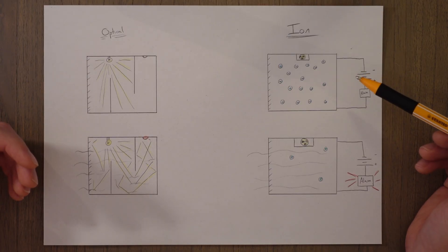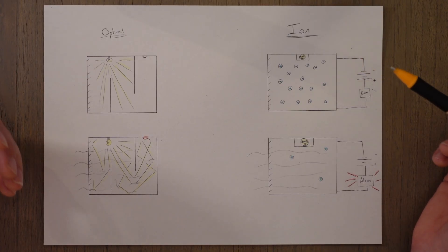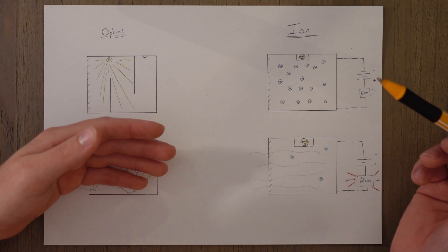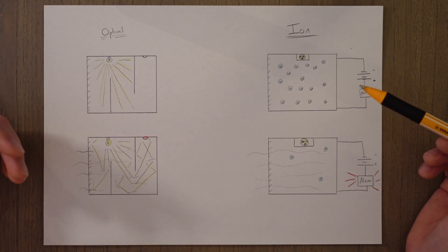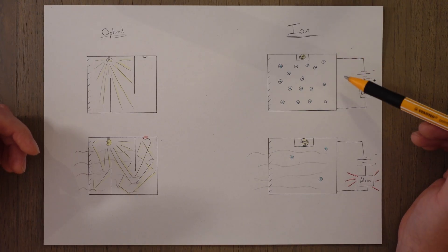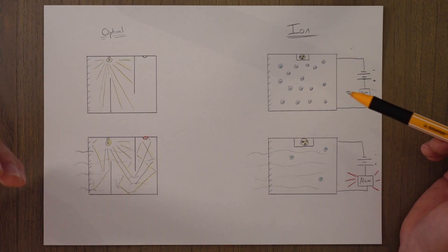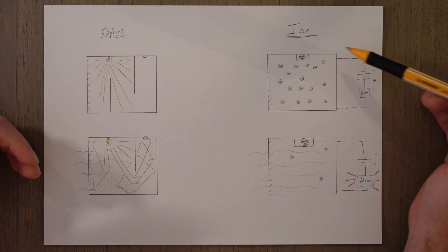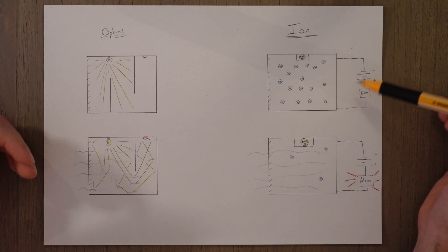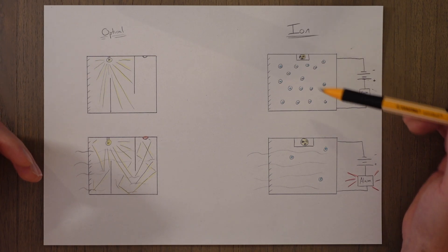The other form of smoke detector is an ion detector. This is sort of the reverse of an optical sensor. With these detectors there's a small amount of radioactive material that reacts with the oxygen in the air to create charged ions. These charged ions allow electricity to flow from one side of the chamber to the other which completes an electrical circuit.